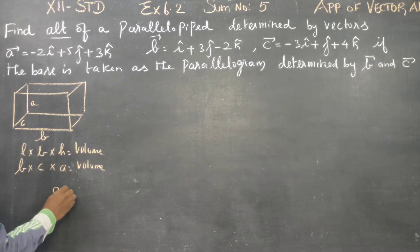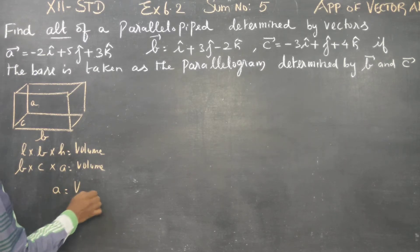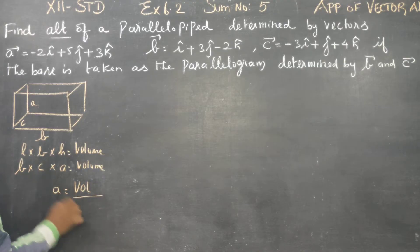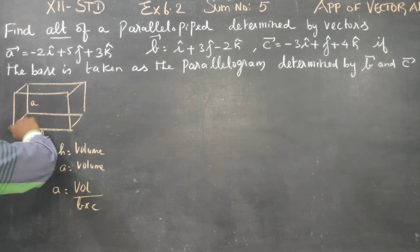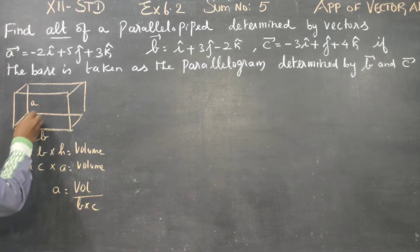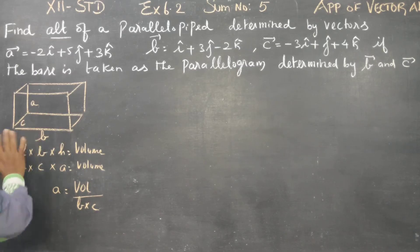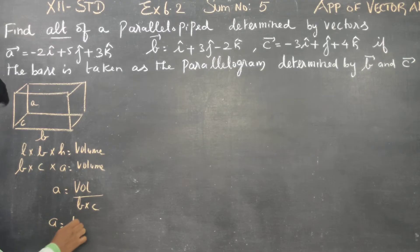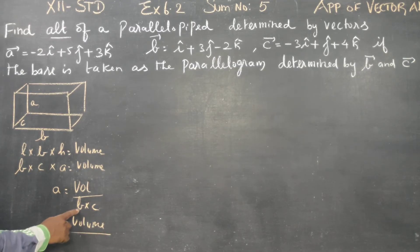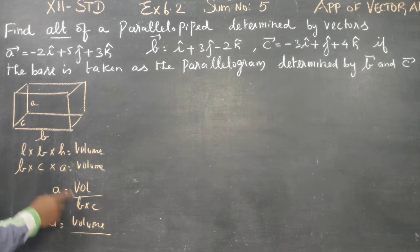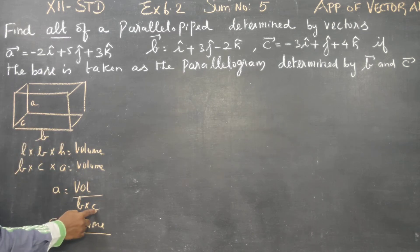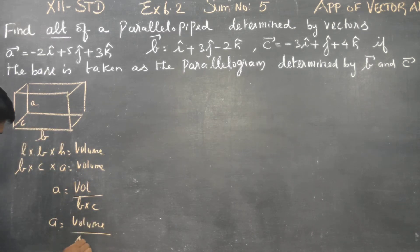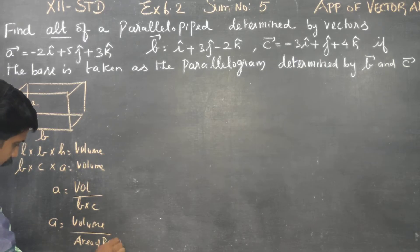I want the height, the altitude. Therefore, altitude equals volume divided by B into C. What is B? Length of the rectangle. C is the breadth of the rectangle. The base is a rectangle shape, a parallelogram shape. So A equals volume divided by length into breadth, and length into breadth is the area of the rectangle.